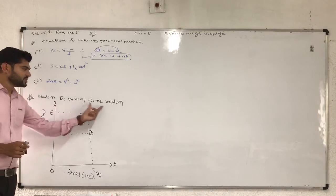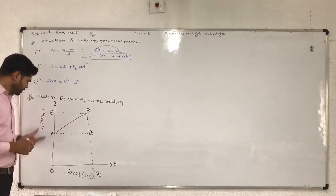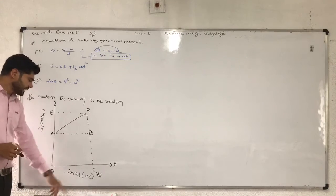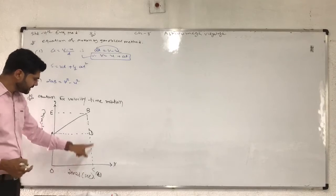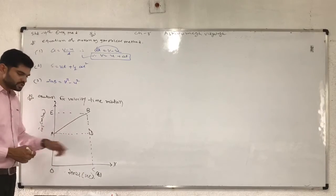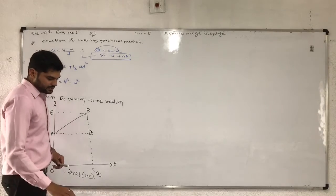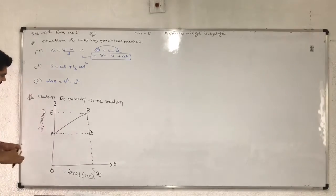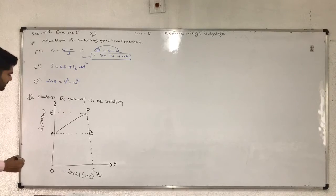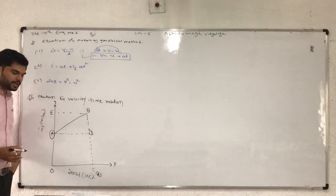Now we start the equation for the velocity against time graph relation. So on the velocity-time graph, we draw points O, C, and D, and draw parallel lines. Here at the initial velocity, point A represents the initial velocity.